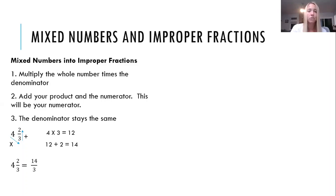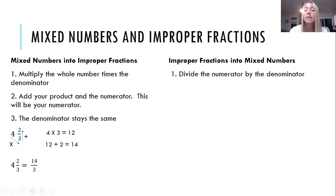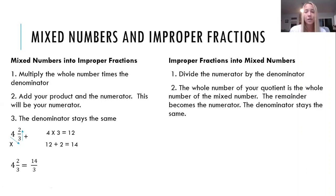Now let's talk about turning an improper fraction into a mixed number. Step one is to divide your numerator by your denominator. Step two is after you have divided, the whole number in your quotient is going to become the whole number in your mixed number. The remainder of your quotient is going to become your numerator and your denominator stays the same.